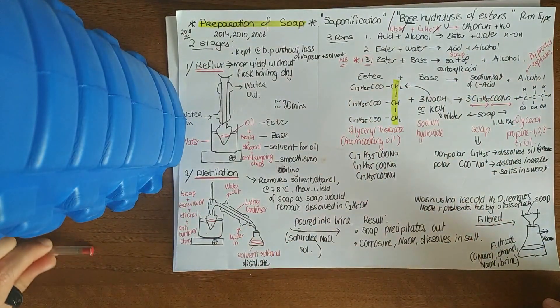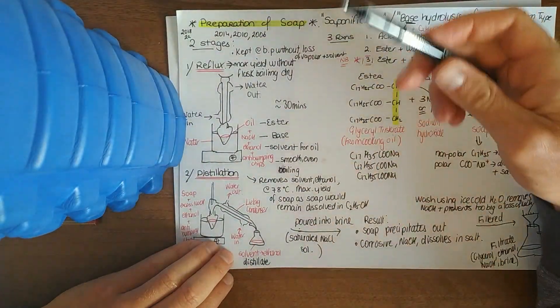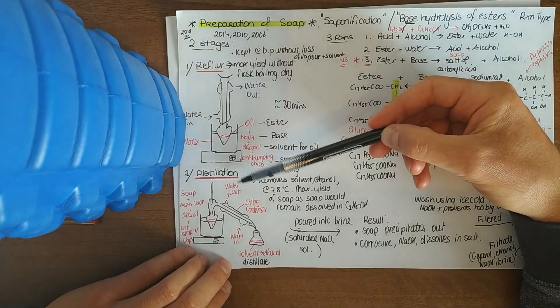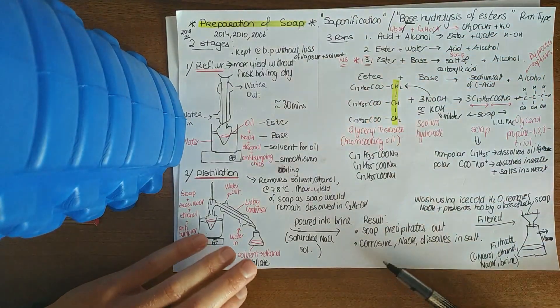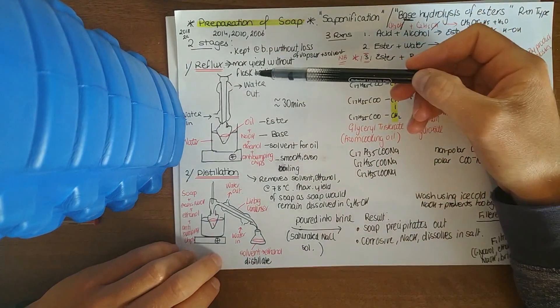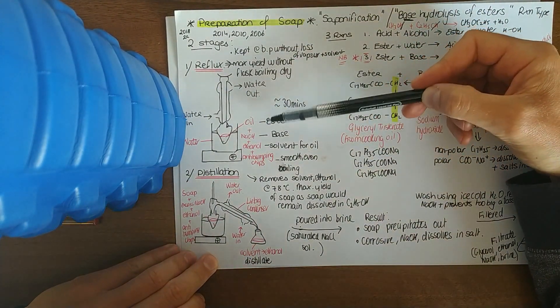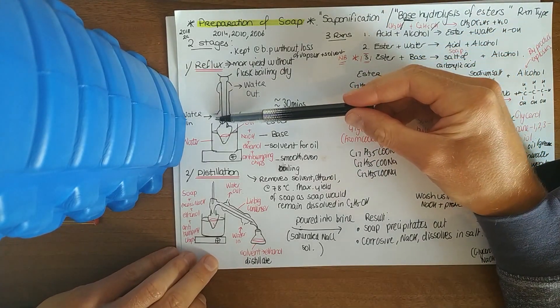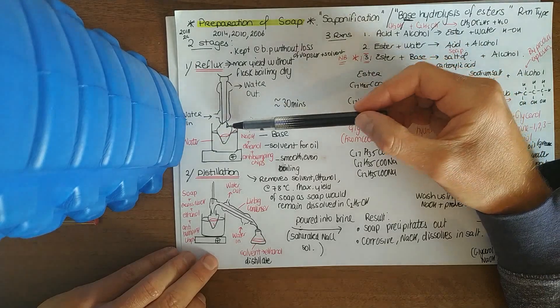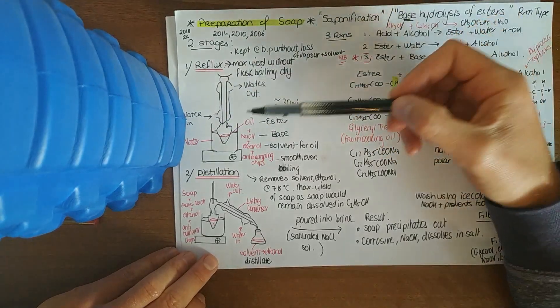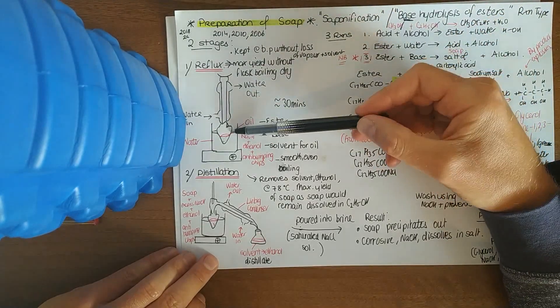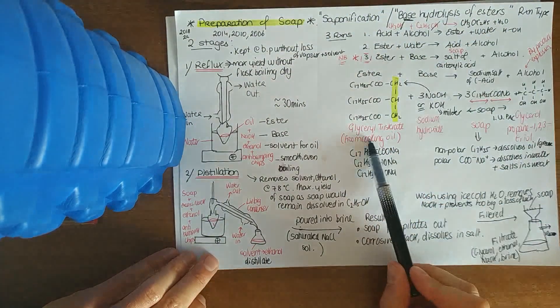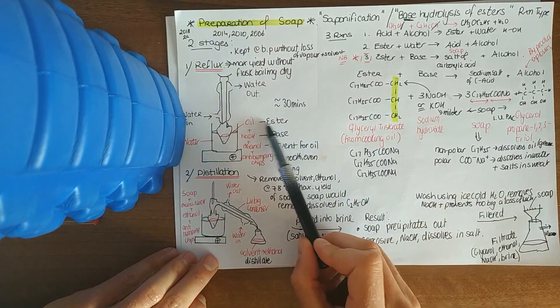Your preparation of soap involves a reflux and a distillation, and then filtration as well. Your reflux mixture looks like that. Like always in these Liebig condensers, your cold water goes in through the bottom, out through the top. In your pear-shaped flask here you've got your oil. Your oil is just your ester, your glycerol tristerate, so there's your ester.